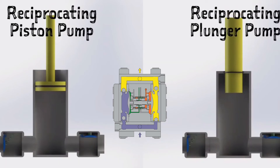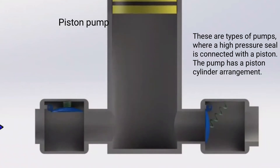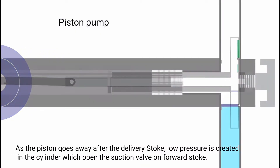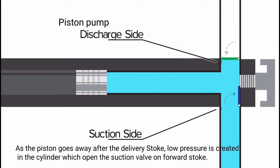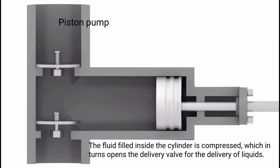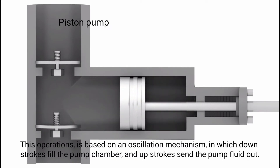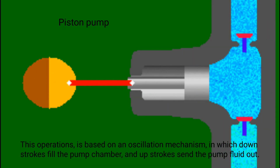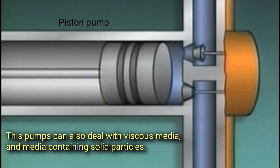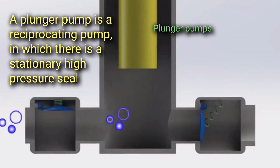Piston pumps are types of pumps where a high-pressure seal is connected with a piston. The pump has a piston-cylinder arrangement. As the piston retracts after the delivery stroke, low pressure is created in the cylinder, which opens the suction valve. On the forward stroke, the fluid filled inside the cylinder is compressed, which opens the delivery valve for the delivery of liquids. This operation is based on an oscillation mechanism in which down-strokes fill the pump chamber and up-strokes send the fluid out. These pumps can also handle viscous media and media containing solid particles.